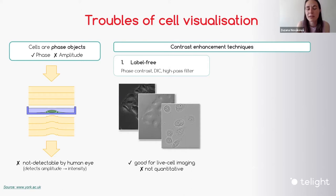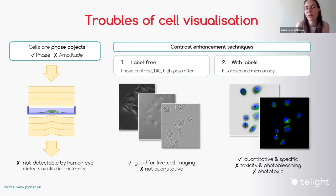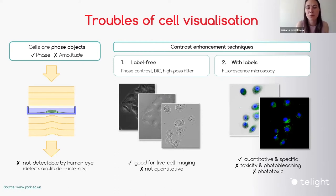For example, there are label-free techniques like phase contrast or DIC. These techniques are good for live cell imaging, but they are not quantitative. If you want to visualize cells quantitatively and use some specific labels, then there is a whole world of fluorescent microscopy, which allows you to visualize structures specifically. But there is always some price for this — using fluorescent labels can interfere with the results, the labels may photobleach, and in some cases you have to use lasers which can induce phototoxicity. So there are always pros and cons.